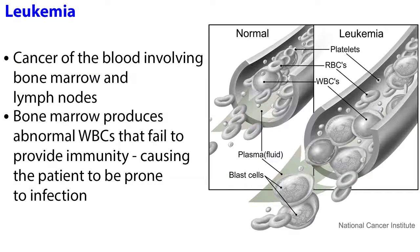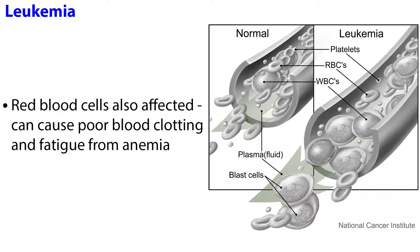Leukemia is cancer of the blood involving the bone marrow and lymph nodes. When cancerous, the bone marrow produces abnormal white blood cells that fail to provide immunity, causing the patient to be prone to infection. Leukemia also affects red blood cells and can cause poor blood clotting and fatigue from anemia.